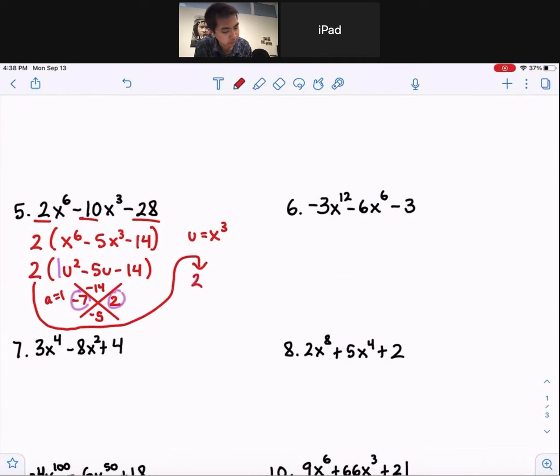So don't forget the 2 in the front. u minus 7 and then u plus 2. But again, we're not interested in what the u answer factors are, we're interested in,